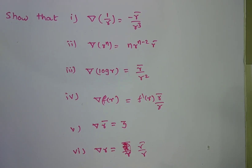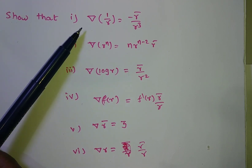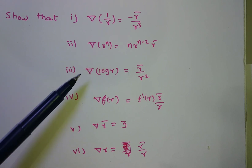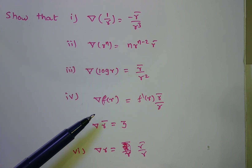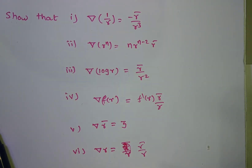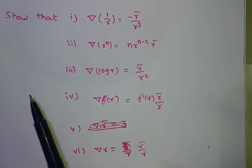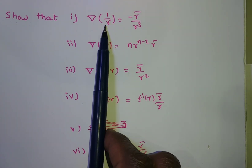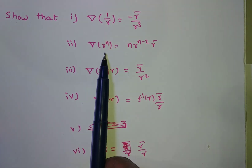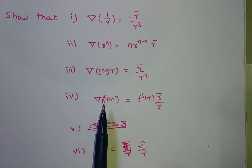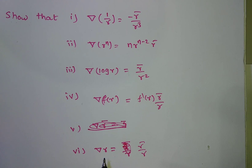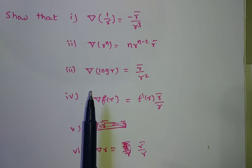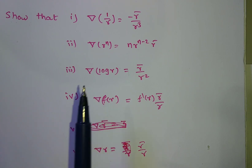Hi friends, now we are going to solve these problems. Here, del(1/r), del(rⁿ), del(log r), del f(r). We are applying del on f(r). Is there any vector? No, this is a scalar. r power n is a scalar, log r is a scalar, f(r) is a scalar, r is also a scalar. So we are applying the del operator on scalar functions only.